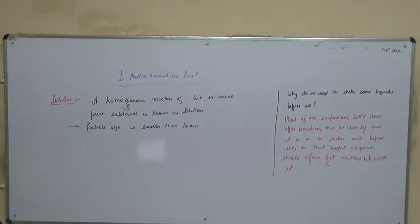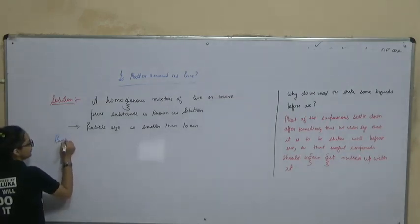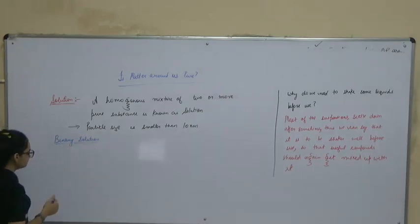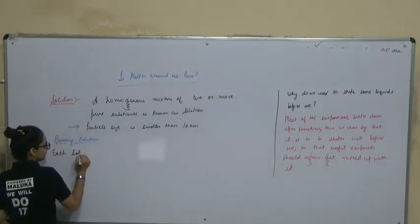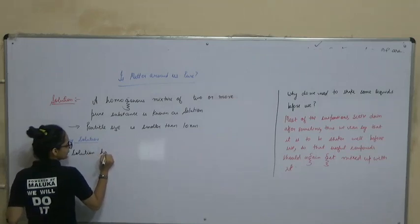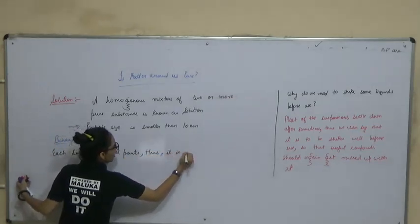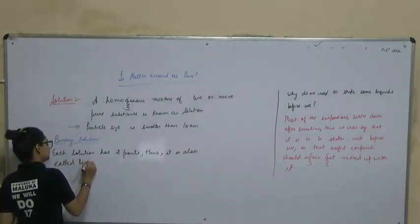Most solutions are binary solutions. In many cases, all solutions are called true solutions and have two parts — thus it is known as a binary solution. Each solution has two parts, and thus it is also called the binary solution.